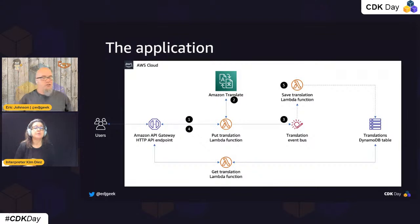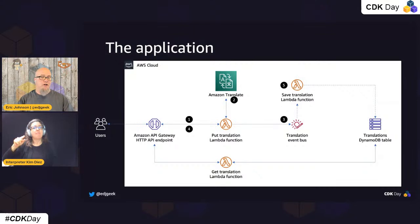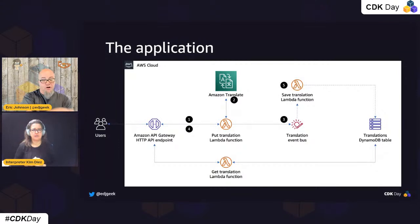I'm going to spend some time demoing this project so you can see what it does. The application is a translation application. A user sends in a string of text and an array of languages — it gets sent from API Gateway to a Lambda function, which makes a request to Amazon Translate to translate that string of text into each of those languages.